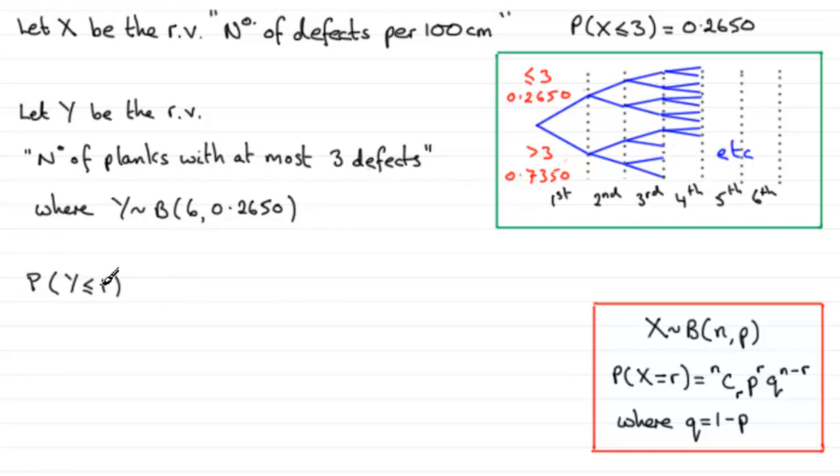So for the probability that Y is less than or equal to 1, that's going to be the same as the probability that Y equals 0 plus the probability that Y equals 1, and we can use the formula now to work out what these two probabilities are going to be.